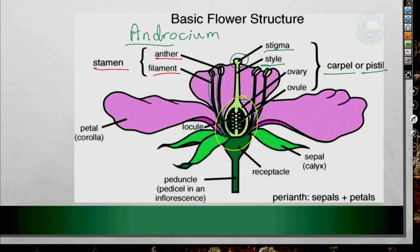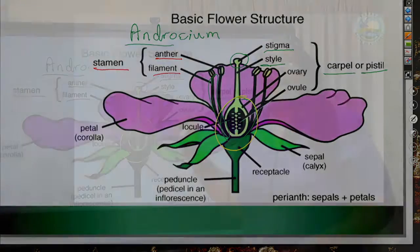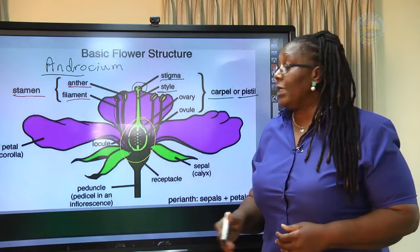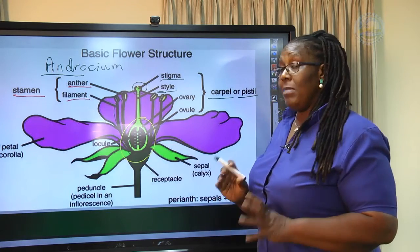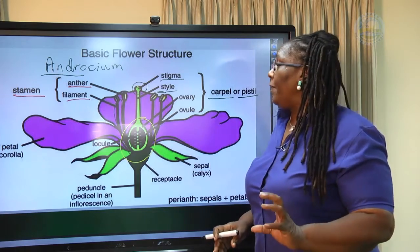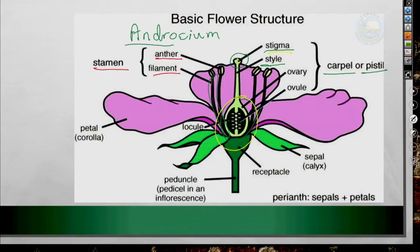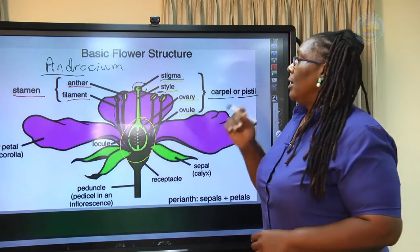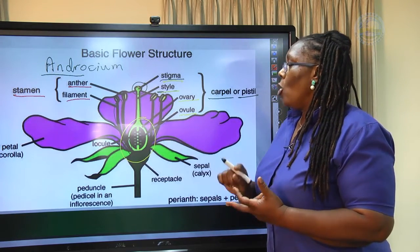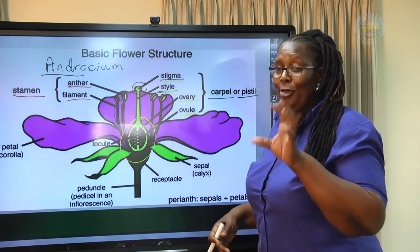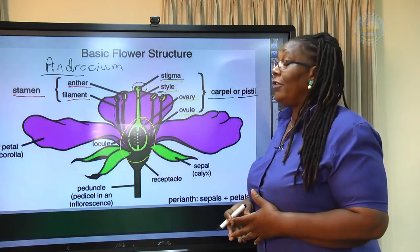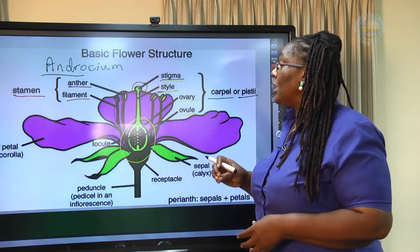The mango we saw earlier came from the ovary. The rest of the flower is just there to facilitate what is happening inside the ovary. The main parts of the female portion are the stigma, the style, and the ovary. Within the ovary you have the ovule.